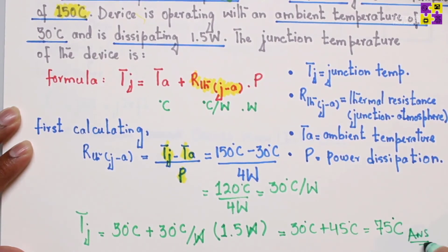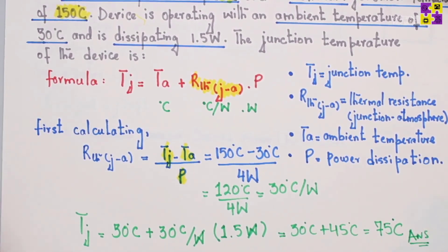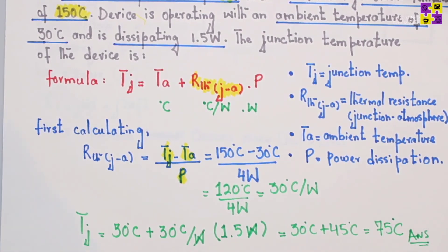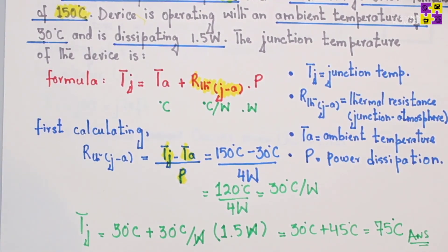The junction temperature is 75 degrees centigrade. This is the highest operating temperature of the actual semiconductor in the electronic device in operation. It is higher than the case temperature and the temperature of the part's exterior.